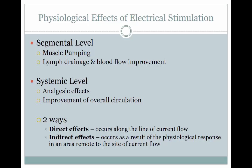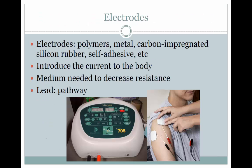These physiological effects can occur through two mechanisms, either through direct effects or indirect effects. The direct effects occur along the line of the current flow. The indirect effect occurs as a result of the physiological response in an area remote to the site of the current flow. Electrodes are devices that are attached to the terminals of a generator or an electrical stimulator unit through which current enters and leaves the body.